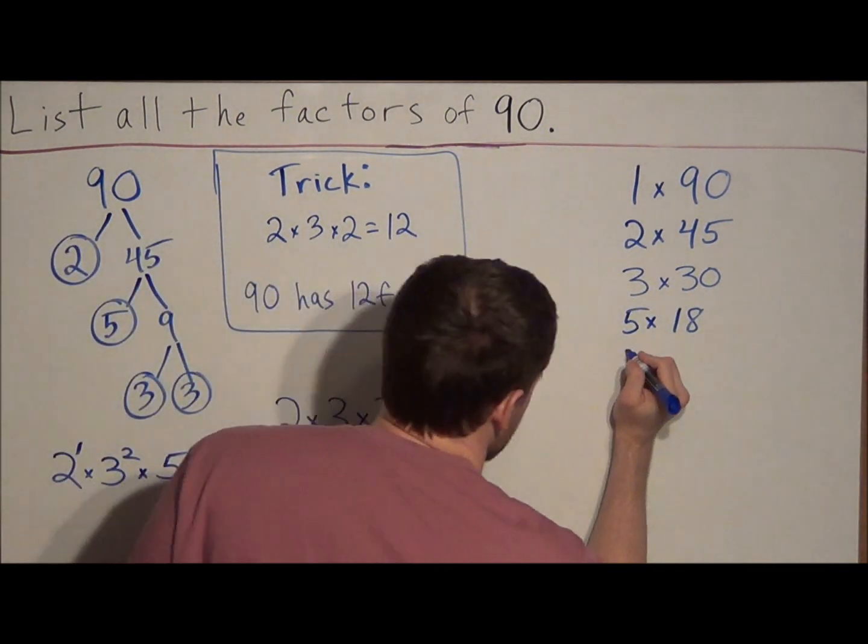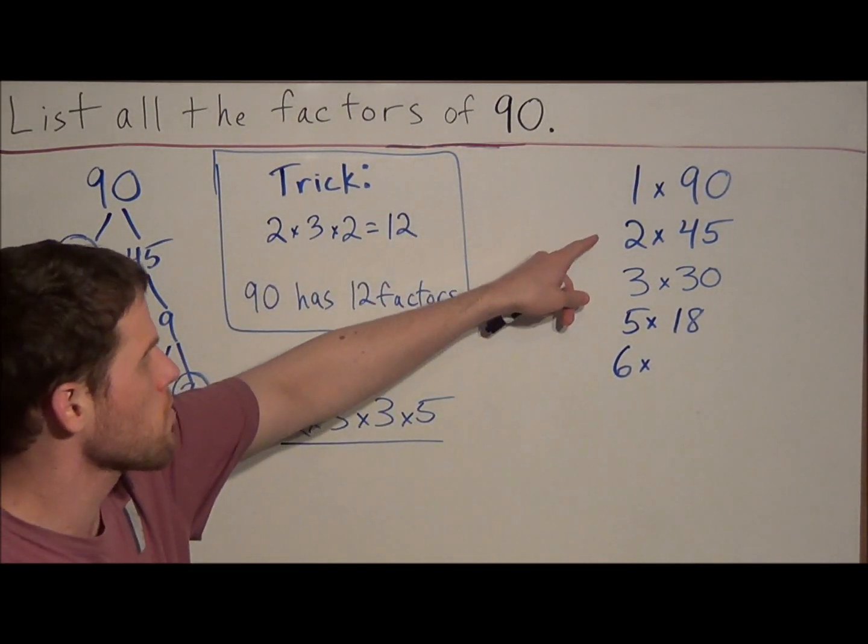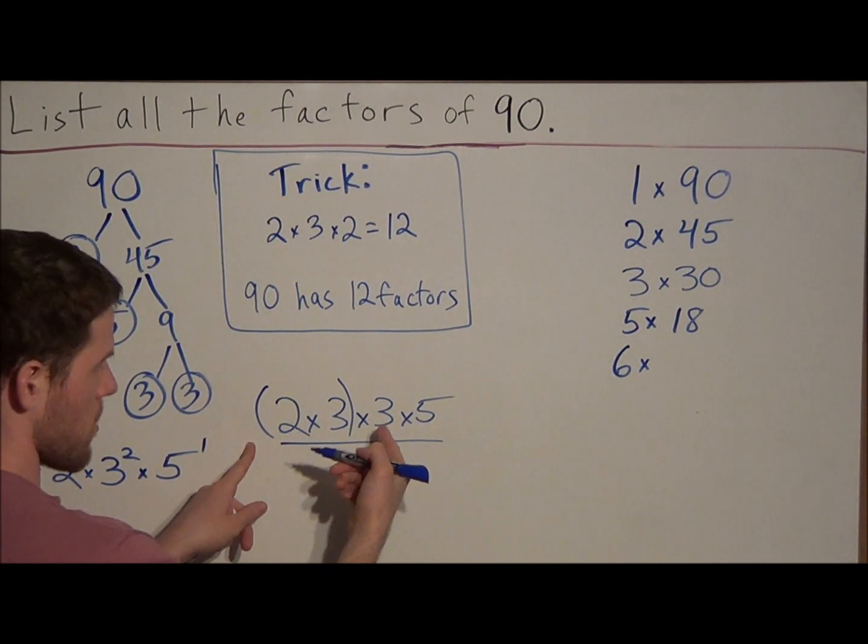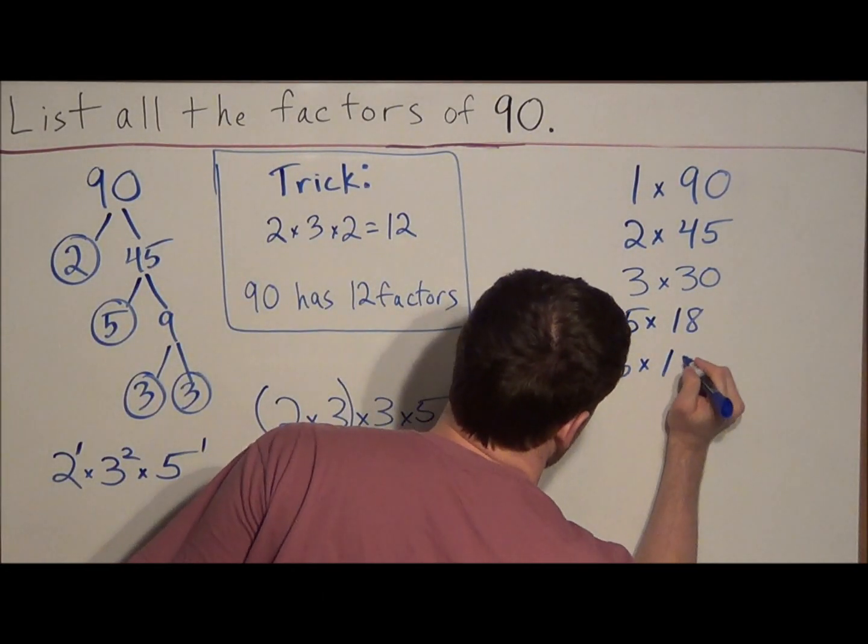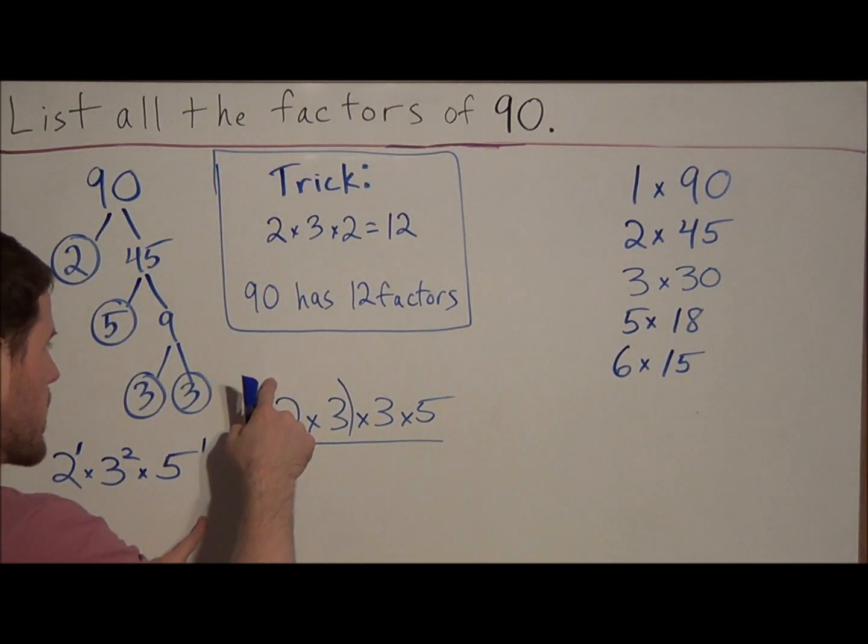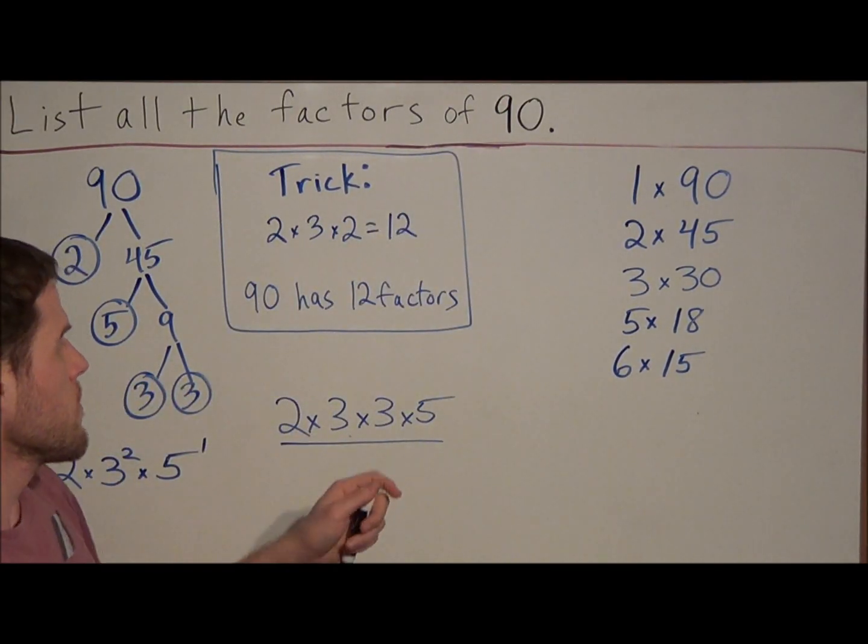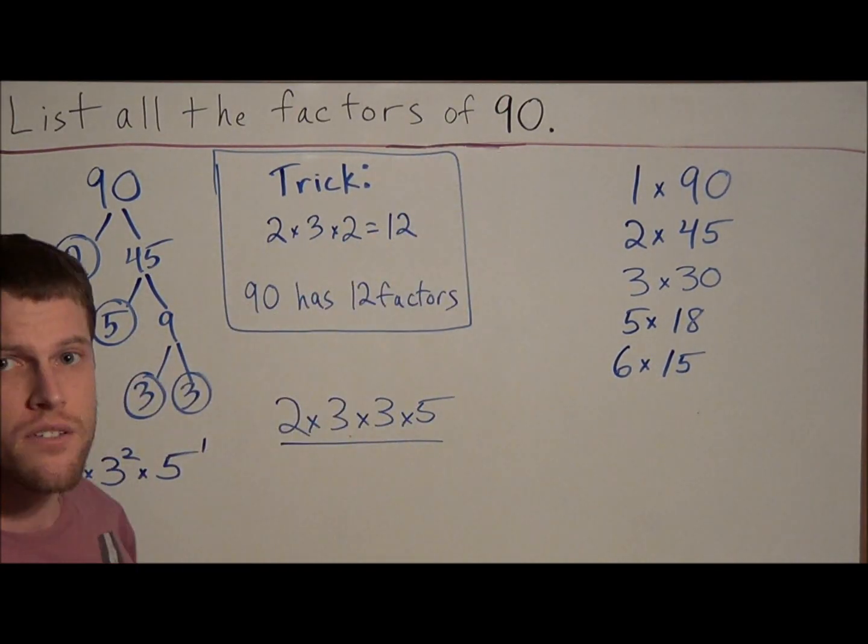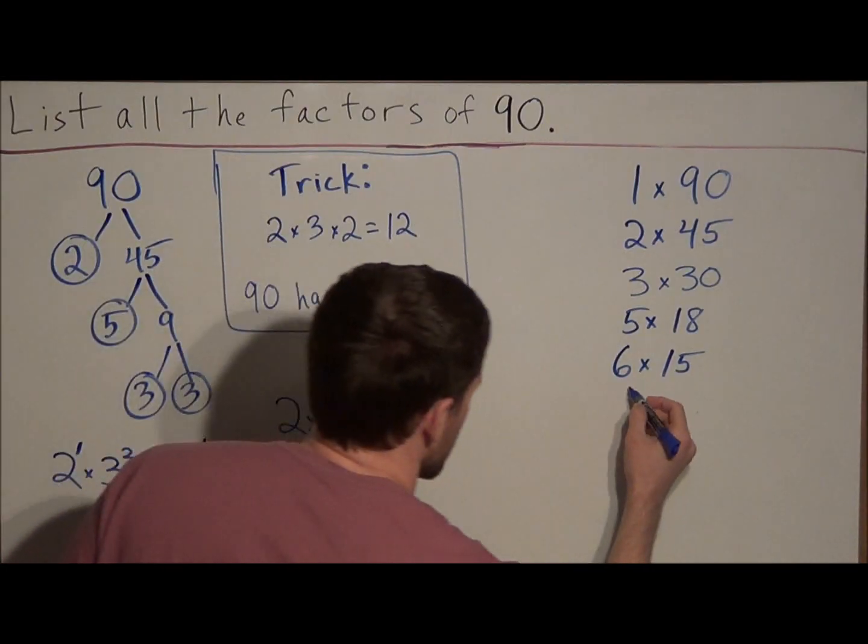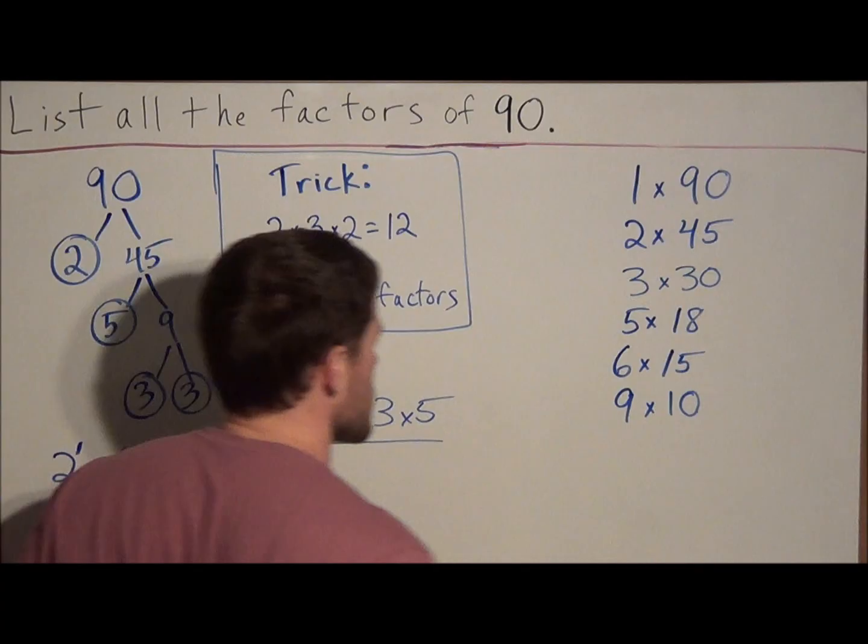Next, we look at 6. 6 will divide into 90, because 90 is divisible by 2 and 3. And if we look, 2 times 3 is 6. So then the other factor would be 3 times 5, which is 15. And you can even check, 6 times 15 is going to equal 90. Since 7 is not part of the prime factorization, we know that 7 is not going to divide into 90. For the same reason, 8 is not going to divide into 90, because we only have 1 factor of 2. So then the next number, 9, we know that 9 times 10 is going to equal 90.